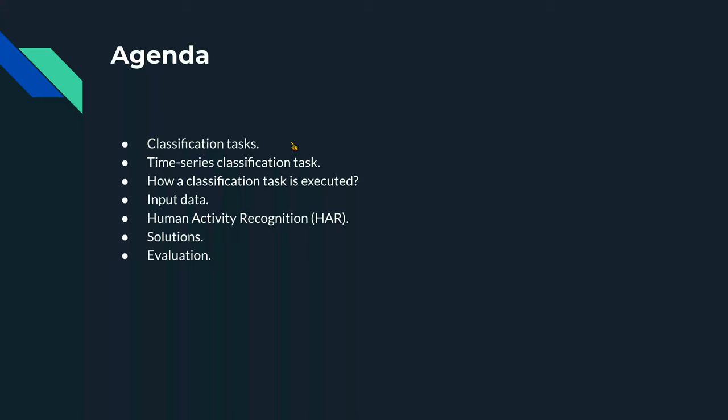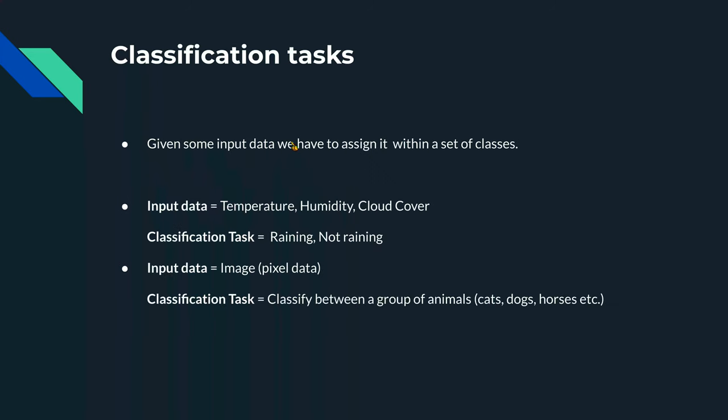Let me start with what exactly is a classification task. When we say classification, we need to classify some things against other things. Given some sort of input data, we have to assign that input data to a set of classes. For example, if we're given temperature, humidity, and cloud cover as input data, what we want to classify could be whether it's raining or not raining. Since there are essentially two classes, this type of problem is called a binary classification problem.